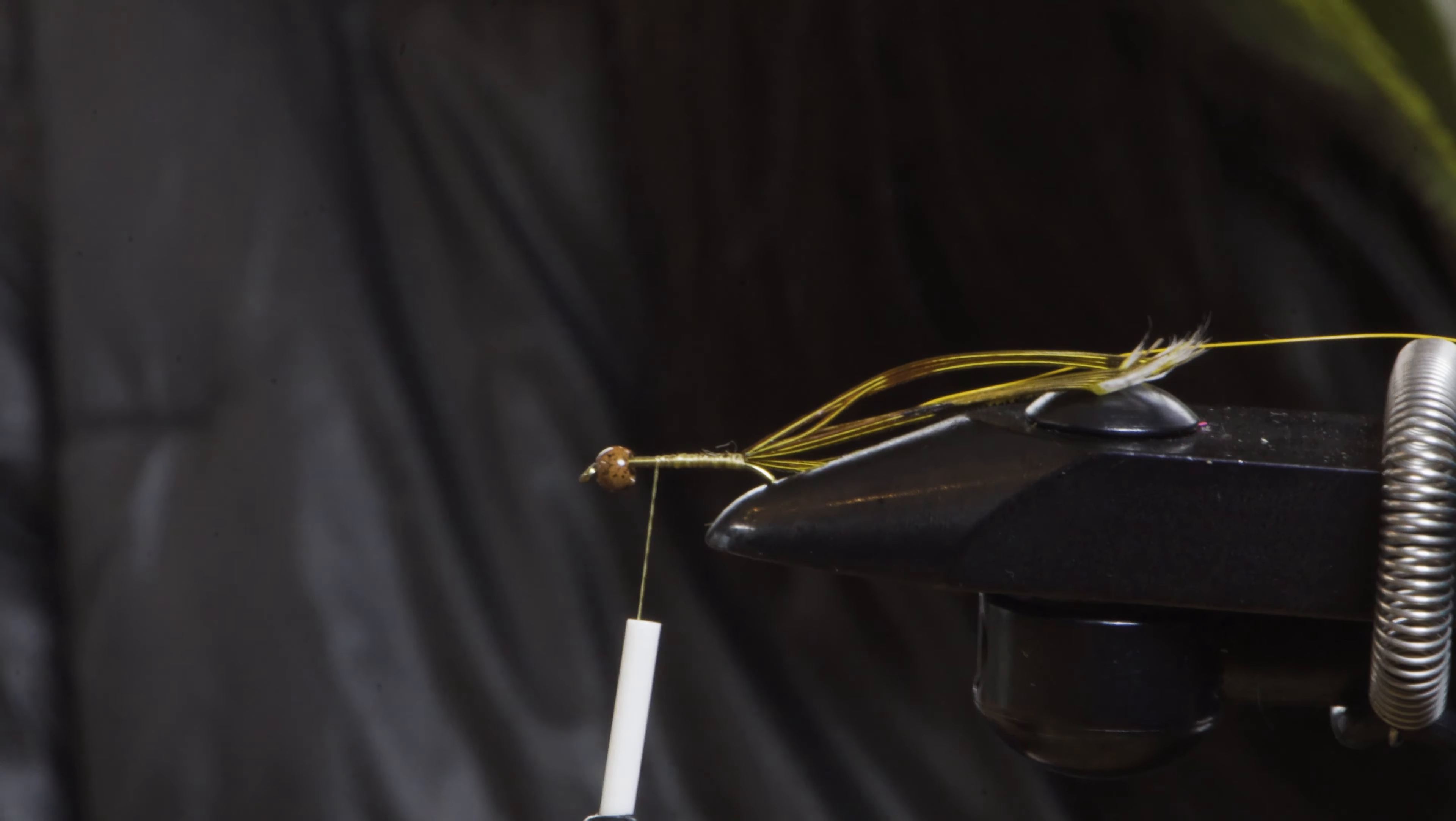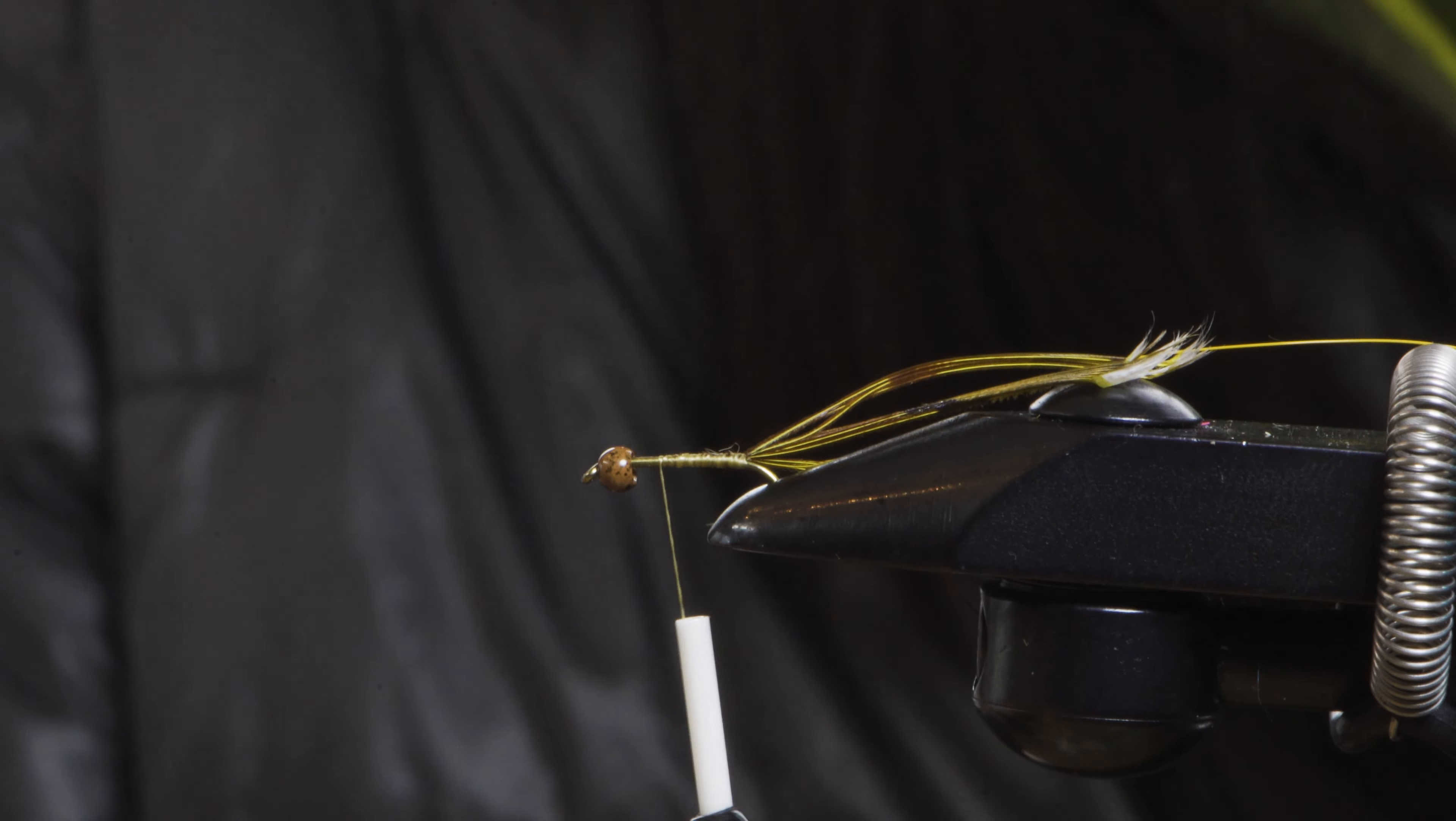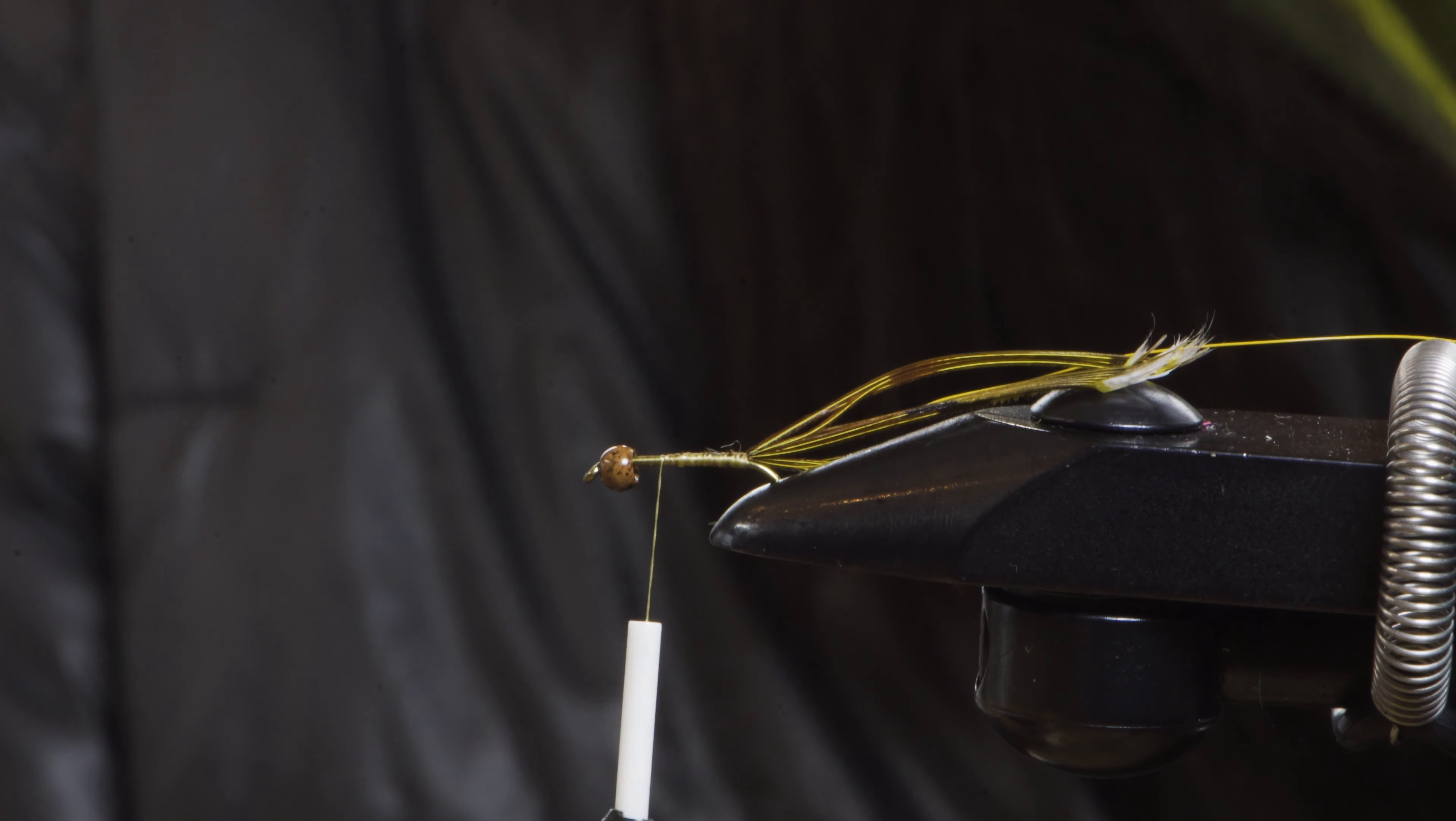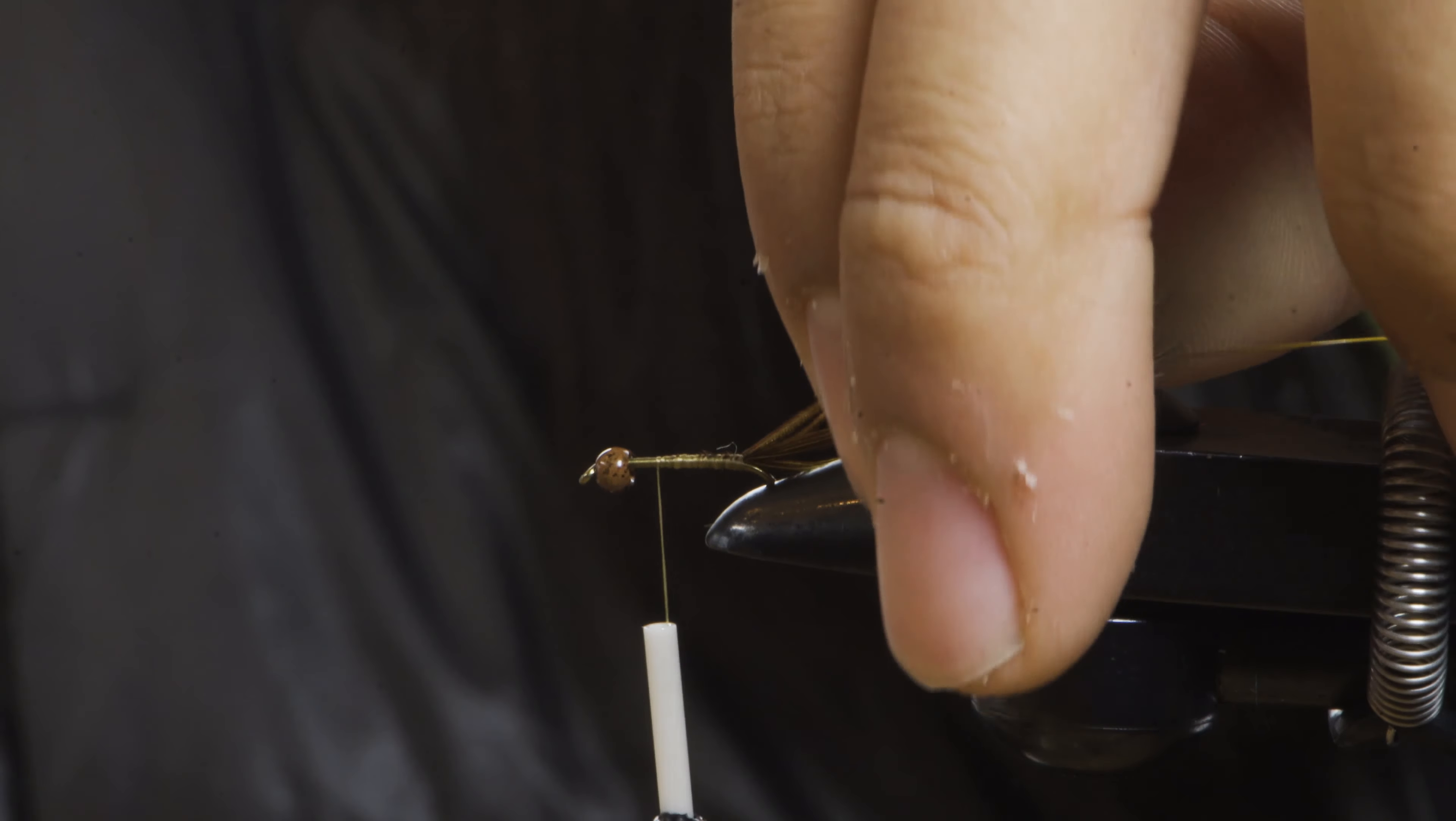So I have two jaws for this vise. These vices are awesome because they have a large variety of jaws you can use. This jaw is really intended from anything between about a 12 to a 6-aught. This is a 14 so we're challenging ourselves today.